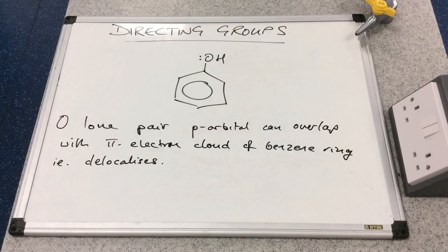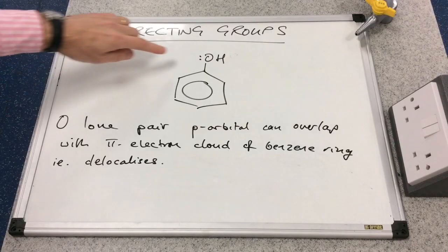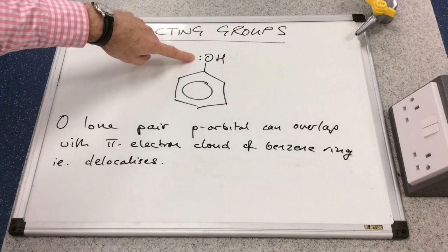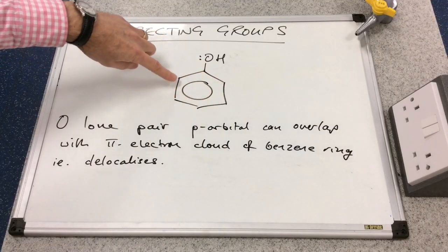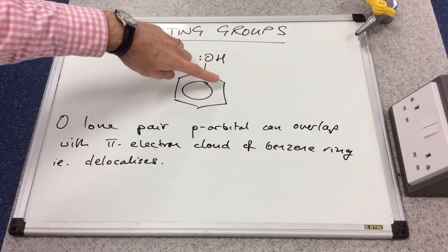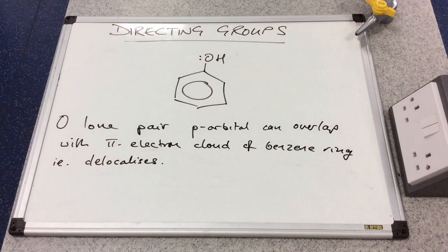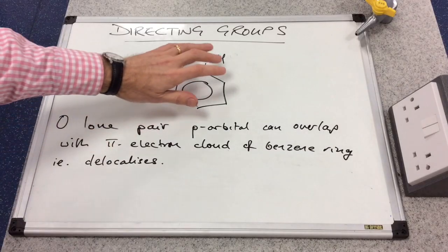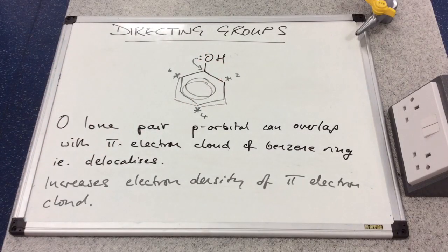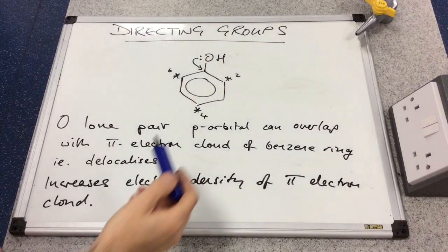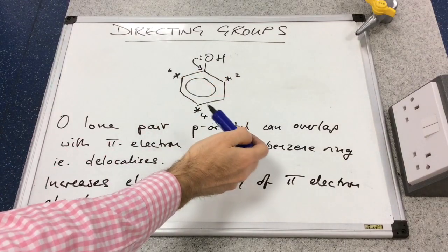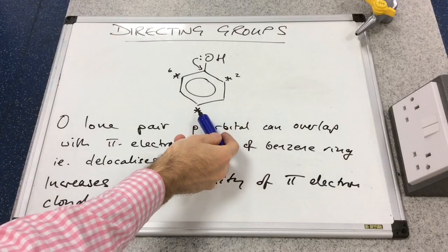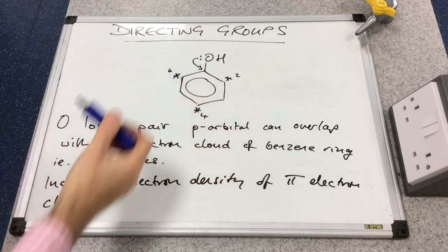The oxygen in the hydroxyl group of phenol has a lone pair of electrons in a P orbital. That P orbital can overlap with the pi electron cloud, so the lone pair becomes delocalized and is shared amongst all six carbons as well as the oxygen. This increases the electron density of the pi electron cloud.